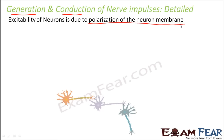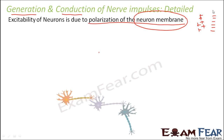Similarly, the neuron membrane — the membrane surrounding the neuron — is also polarized. The question is how is it polarized? When we talk about polarization of the neuron membrane, we are talking about a difference in charges: positive charges on one side and negative charges on the other. This creates a potential difference across the membrane.